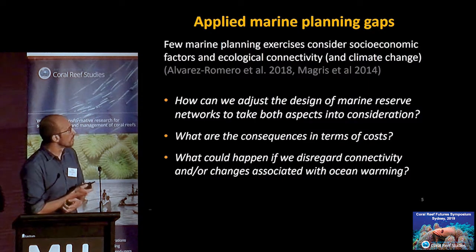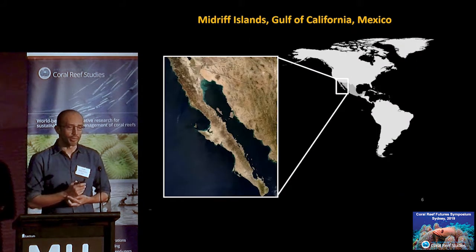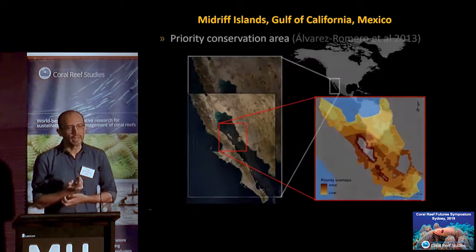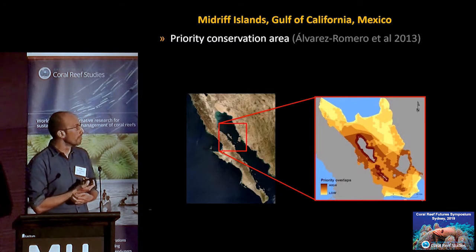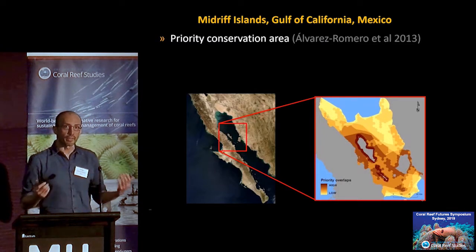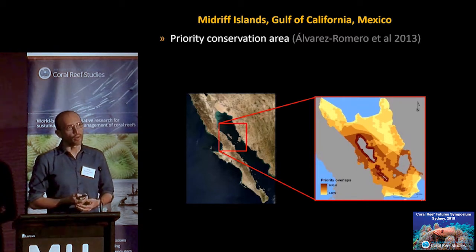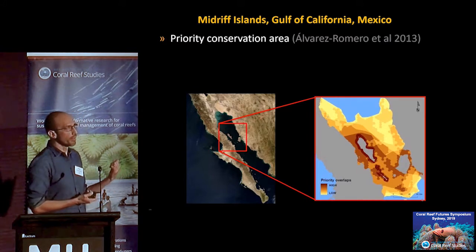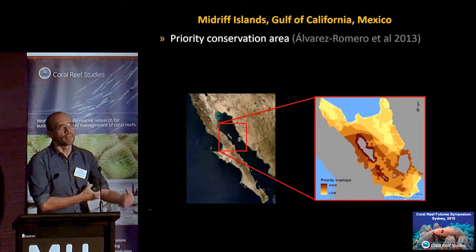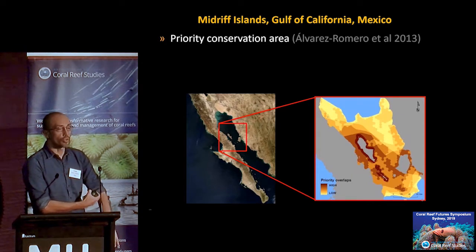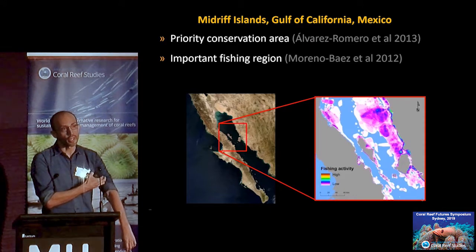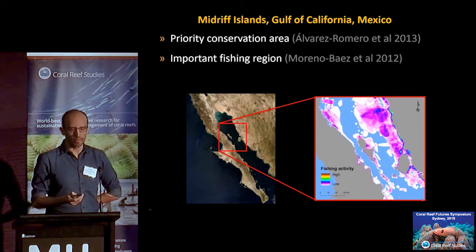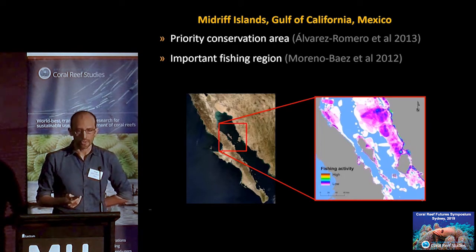We did this in the Gulf of California, specifically in the Midriff Islands, which has been identified as high priority by multiple studies at very different scales. It is certainly a hotspot for priority conservation, and an important source of food for both subsistence and commercial fisheries in the region, making it an area where these strategies have been seen as important to implement.